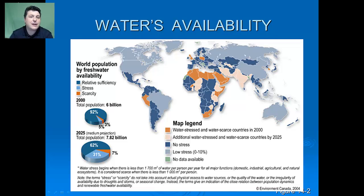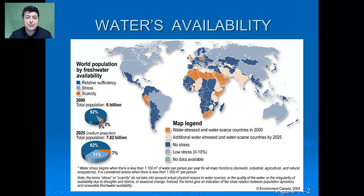That water isn't necessarily evenly distributed around the world, especially in relationship to population densities. Drinking, sanitation, and hygiene needs constitute the basic human survival needs for water. These minimum needs total about 50 liters or 13.2 gallons per day per person.